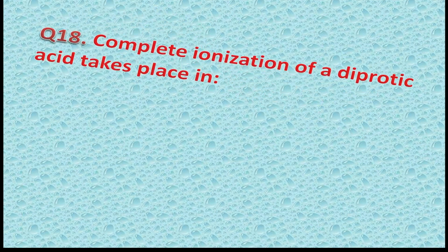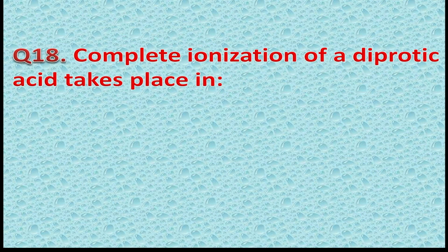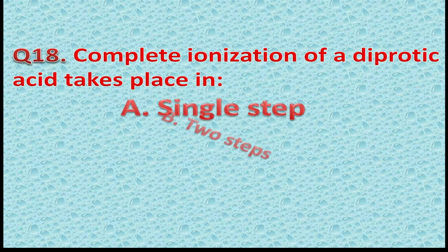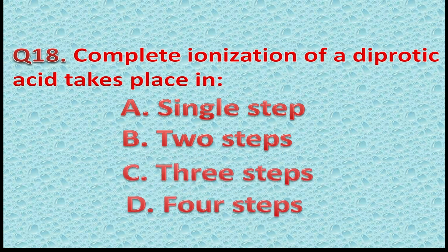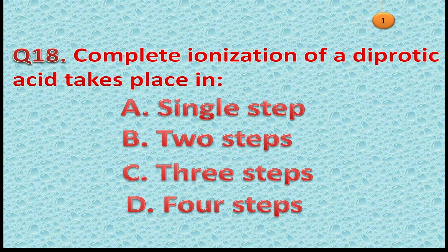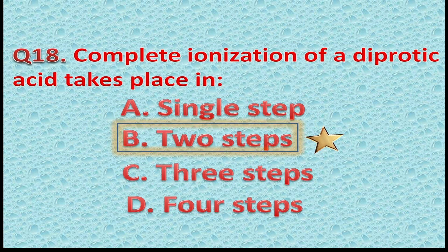Question 18: Complete ionization of a diprotic acid takes place in — Option A: Single step. Option B: Two steps. Option C: Three steps. Option D: Four steps. The correct answer was Option B — Two steps. You got one more point for this correct answer.